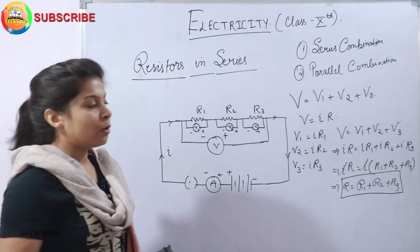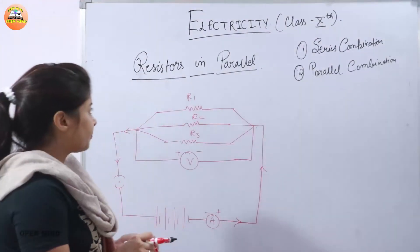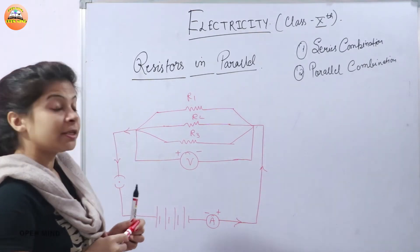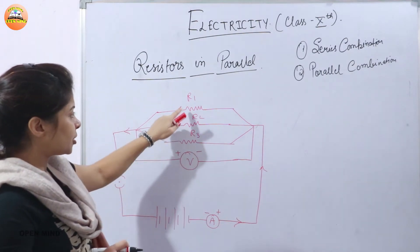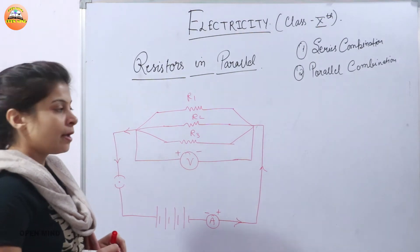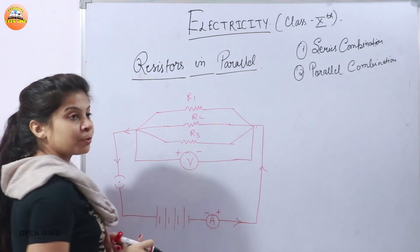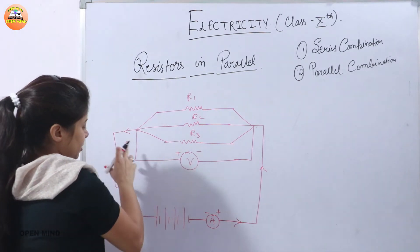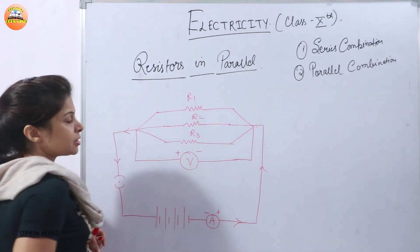Now we will see how to find the total resistance in a parallel combination. In parallel connections, the three resistances R1, R2, and R3 are connected in parallel. They are then connected to a voltmeter to measure the potential difference across the total resistance, and the circuit also includes a battery, an ammeter, and a key.